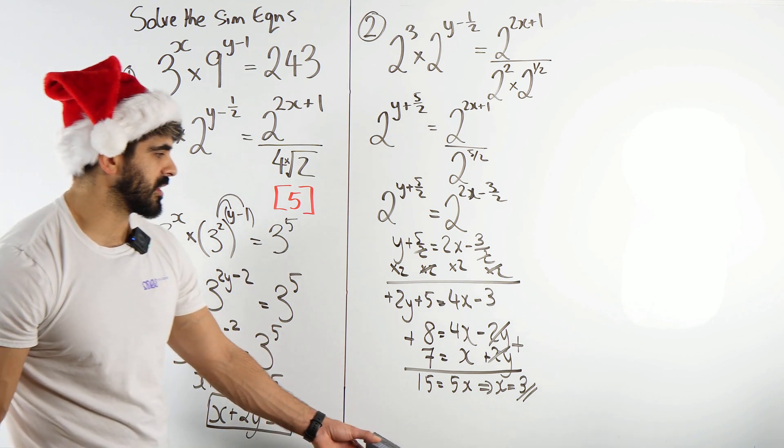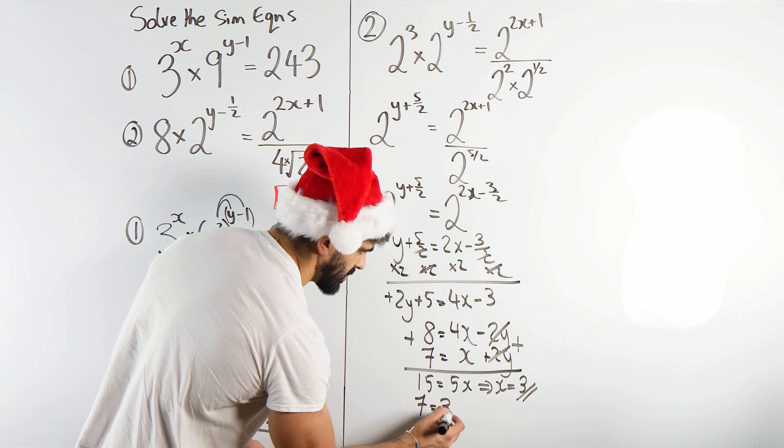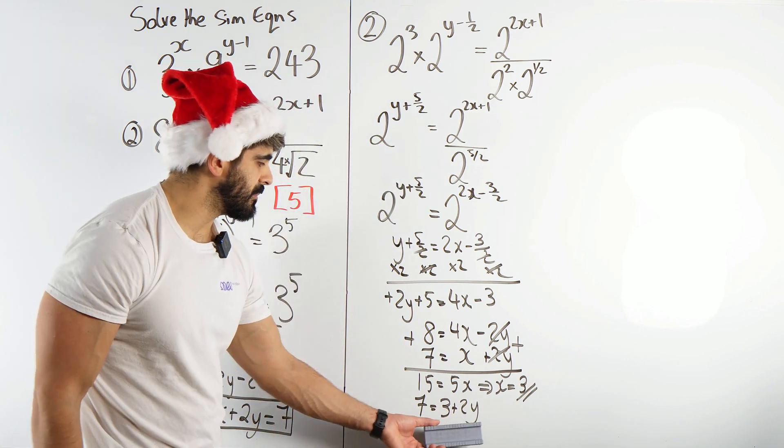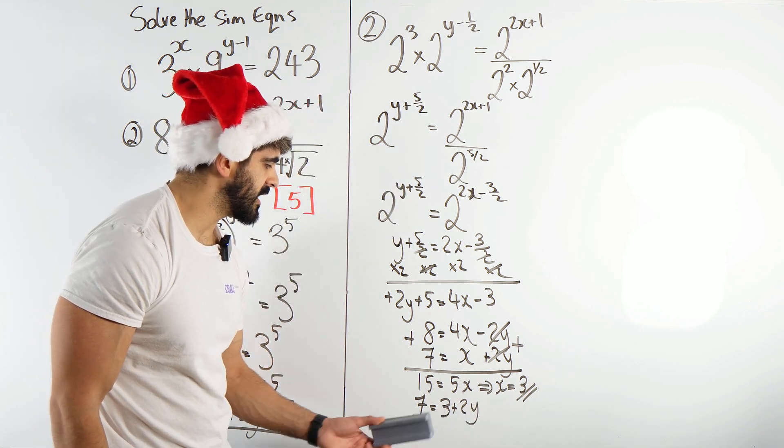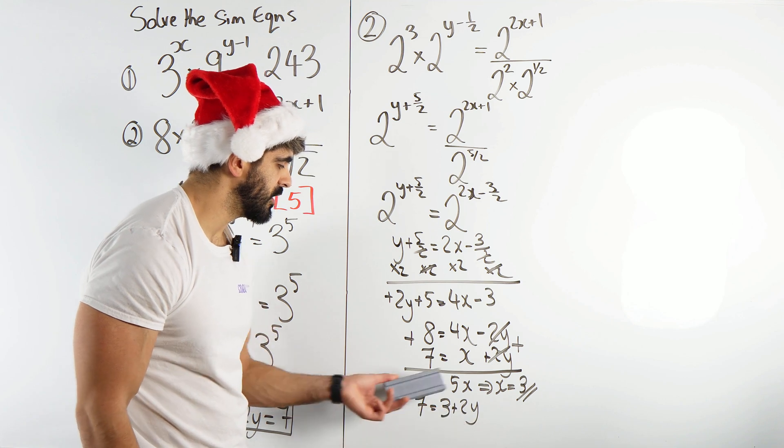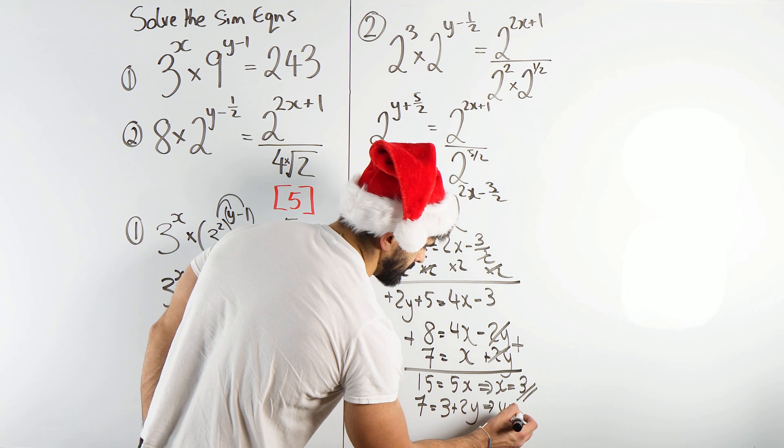Let me just sub into one of the equations. I'm going to sub into this. We have 7 is x, which is 3, plus 2y. So when you take a number, you times it by 2, then add 3, you get 7. y is obviously 2. You can minus the 3 over, you'd get 2y is 4. 2 times the number is 4. That number y is 2.